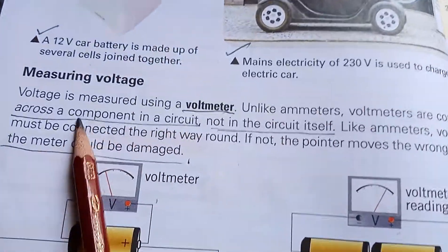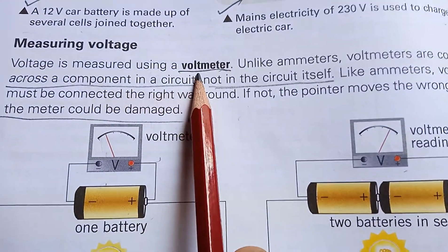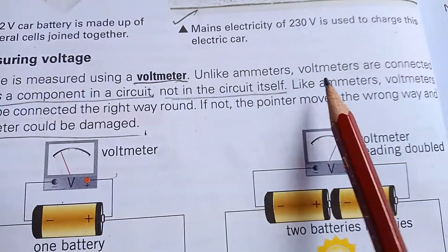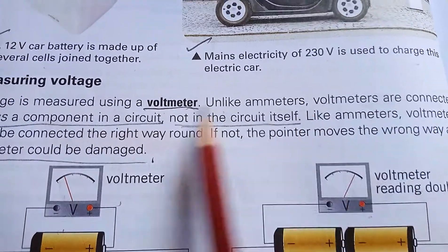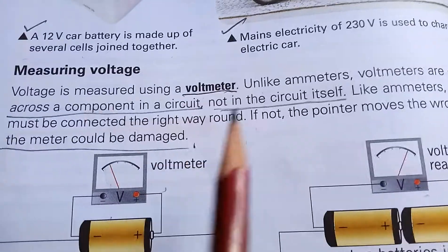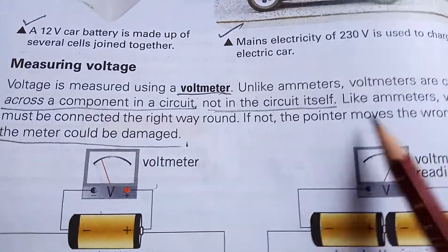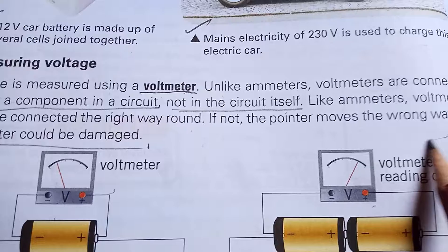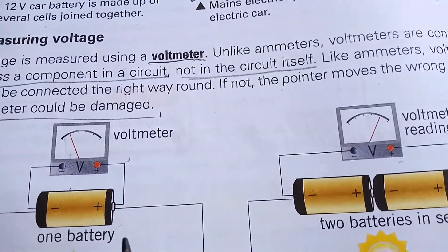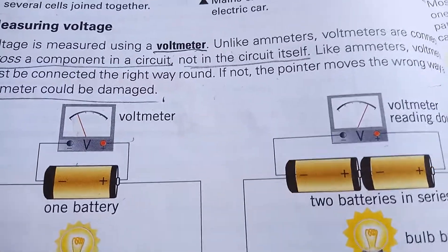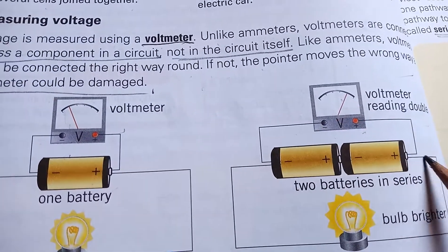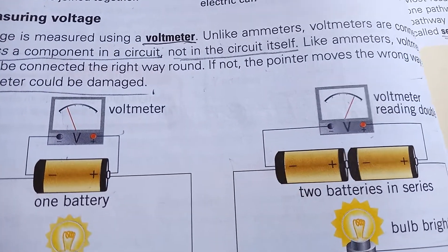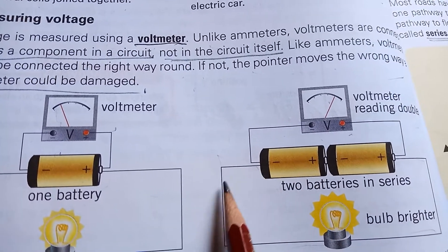Voltage is measured using a voltmeter. Unlike ammeters, voltmeters must be connected into the right way around. If not, the pointer moves the wrong way and the meter could be damaged. The voltmeter is connected across the battery, but not in series with the current as an ammeter is connected.